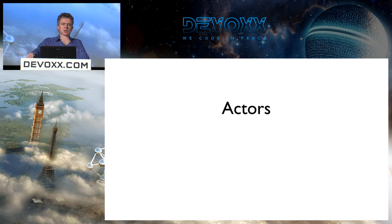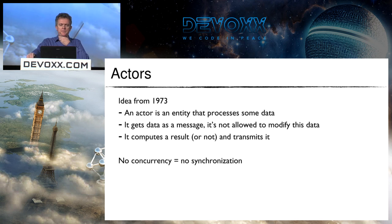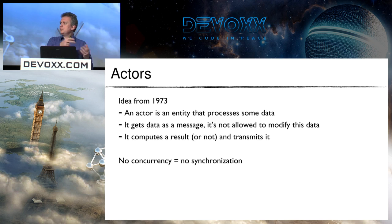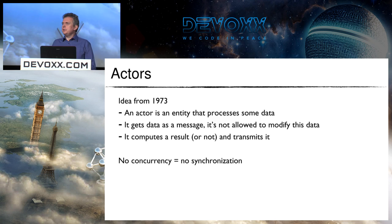Actors are the second way of doing synchronization without synchronization. The idea is not new — it comes from 1973. An actor is a simple entity that processes data: it receives an immutable message from the outside, may compute a result, and returns it as an immutable message. Inside an actor there is no concurrency, so there is no need for any synchronization.